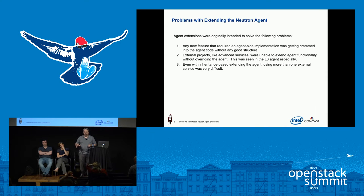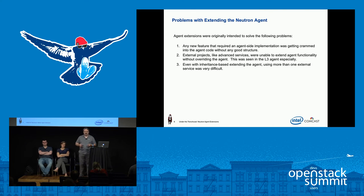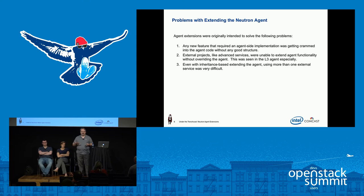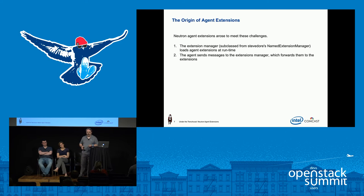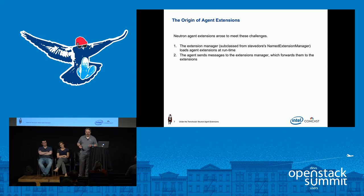We saw this especially in the L3 agent but also in the L2 agent. Even with that inheritance-based extending of the agent, when you had more than one external service it became extremely difficult to have those work at the same time. For example, at some point somebody got firewall-as-a-service and VPN-as-a-service working simultaneously with the L3 agent, but it required cartwheels in the code. Neutron agent extensions arose to meet those challenges.